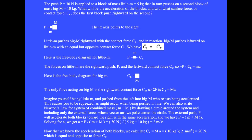A push P equals 30 newtons is applied to a block of mass little m equal 5 kilograms that in turn pushes on a second block of mass big M equal 10 kilograms. What will be the acceleration of the blocks, and with what contact force CR does the first block push rightward on the second? Little m pushes big M rightward with contact force CR, and in reaction, big M pushes leftward on little m with an equal but opposite contact force CL.